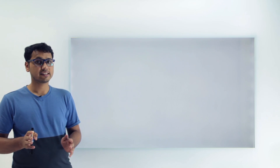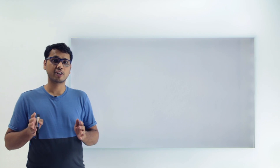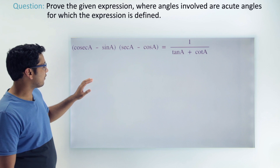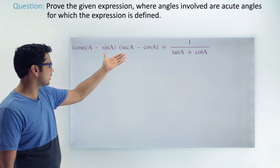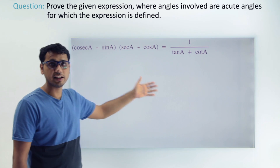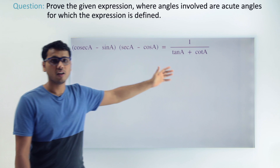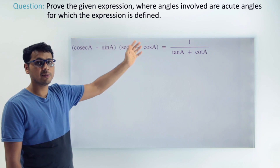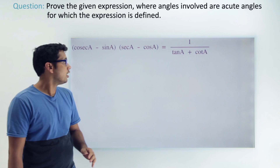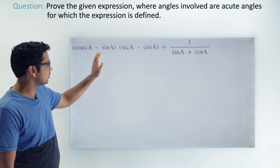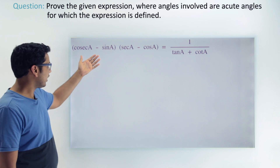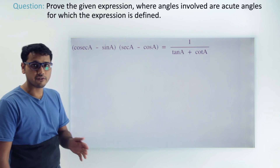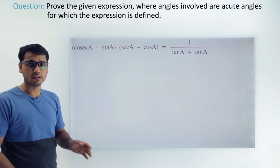Let's move on to our last example of trigonometric identities. In this last example, we have to again prove that the left hand side is equal to the right hand side for all values of 'a' wherever our trigonometric ratios are defined. Now if we look at the question, can you find a way to proceed?